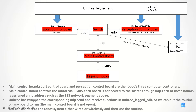The Unitree Legged SDK can be divided into three main parts: main control board, sport control board, and perception control board. The main control board controls the motors via RS-485. Each board is connected to the switch through UDP. Each of these boards is assigned an IP address, such as the 192.168.123 network segment. Unitree has implemented the corresponding UDP send and receive functions in Unitree Legged SDK.